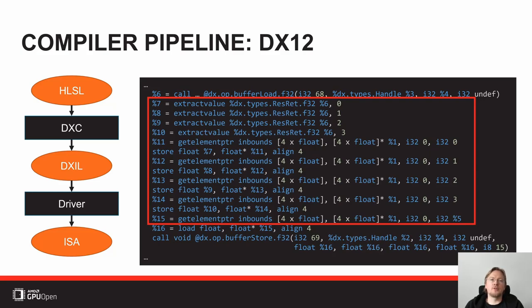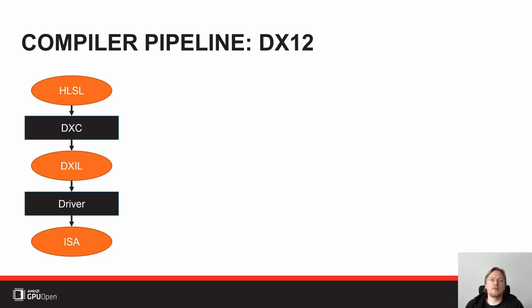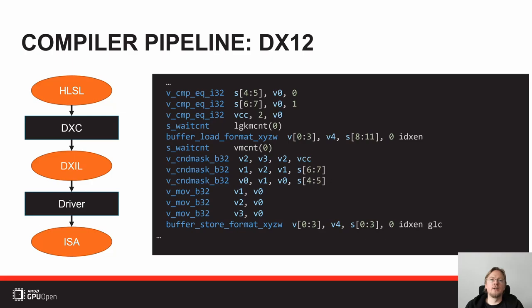That goes to the same backend as before, and in this case the backend compiler produces very different code. Instead of dot-product-4 and floating-point multipliers, it generates a conditional move based on which index is being used. The key point here is we've been using the same source code, the same compiler on the same hardware, and we're getting two different results just because the frontend in the pipeline has been different.